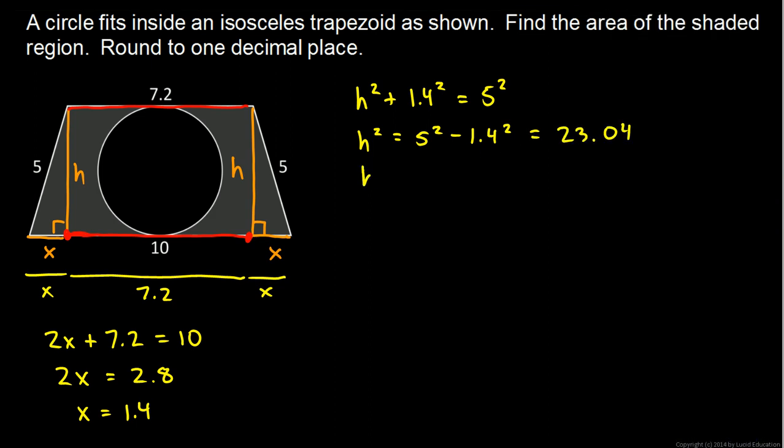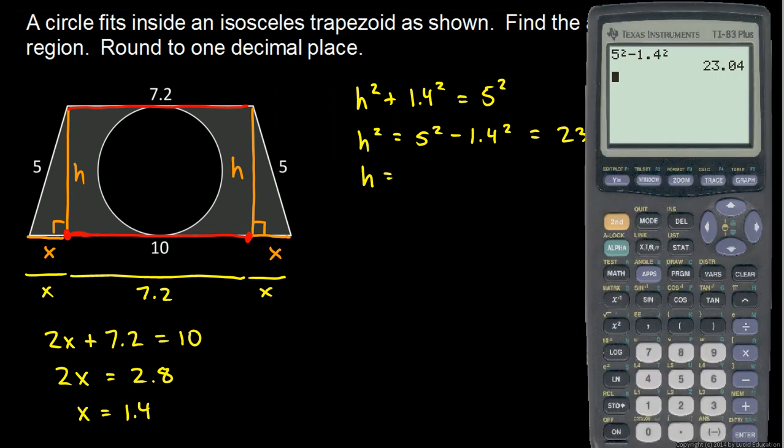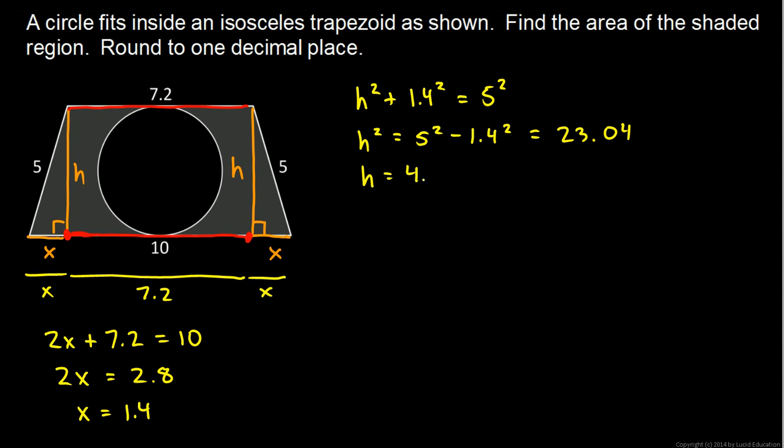So h will be the square root of that. Okay, so the square root of 23.04 is 4.8. So the height is 4.8. That's my height h. Now I can find the area of the trapezoid.